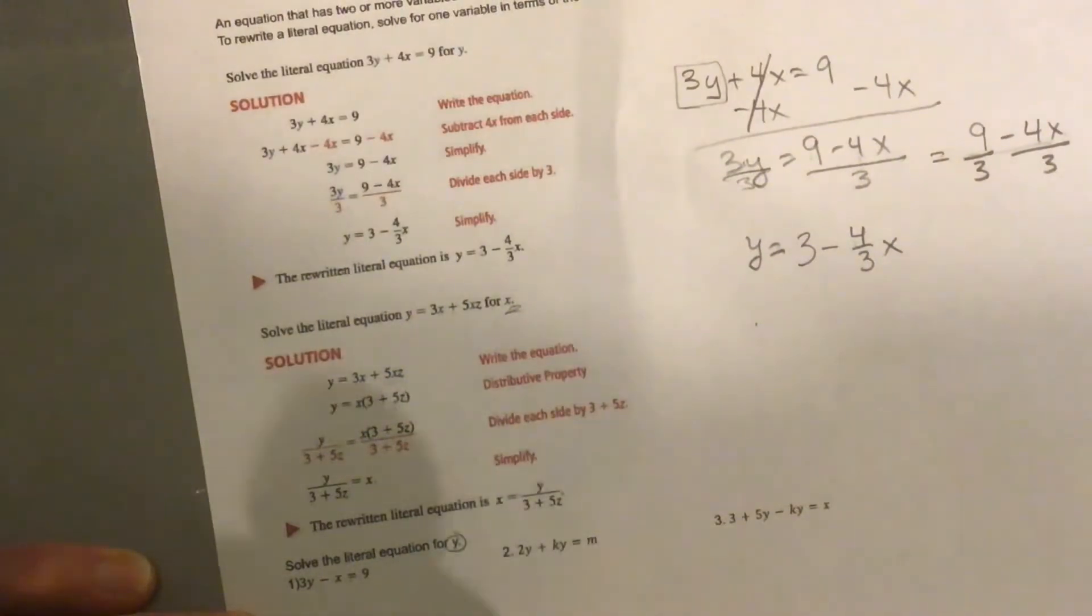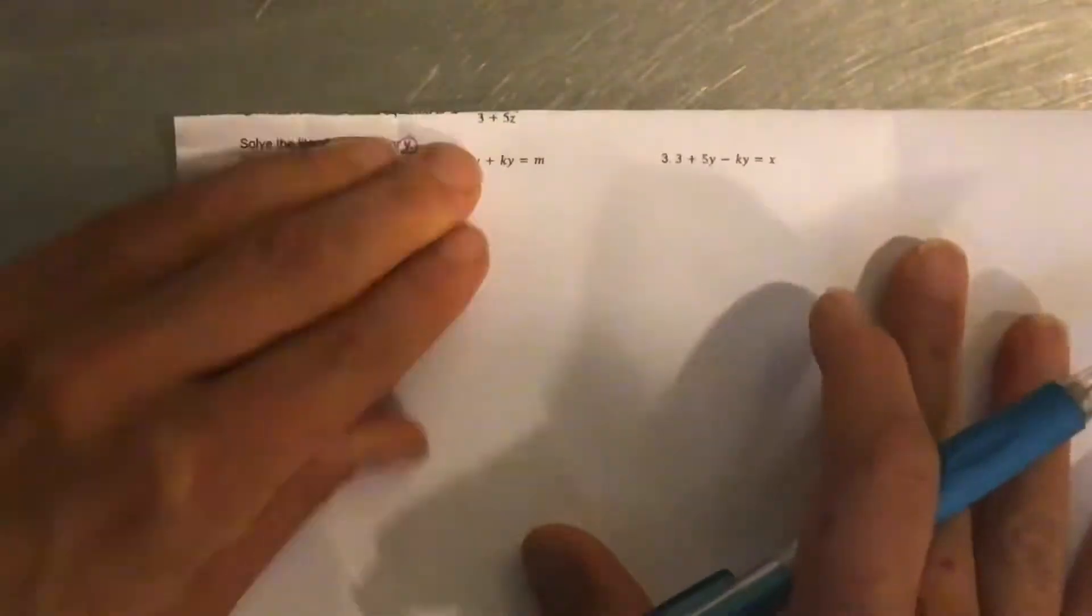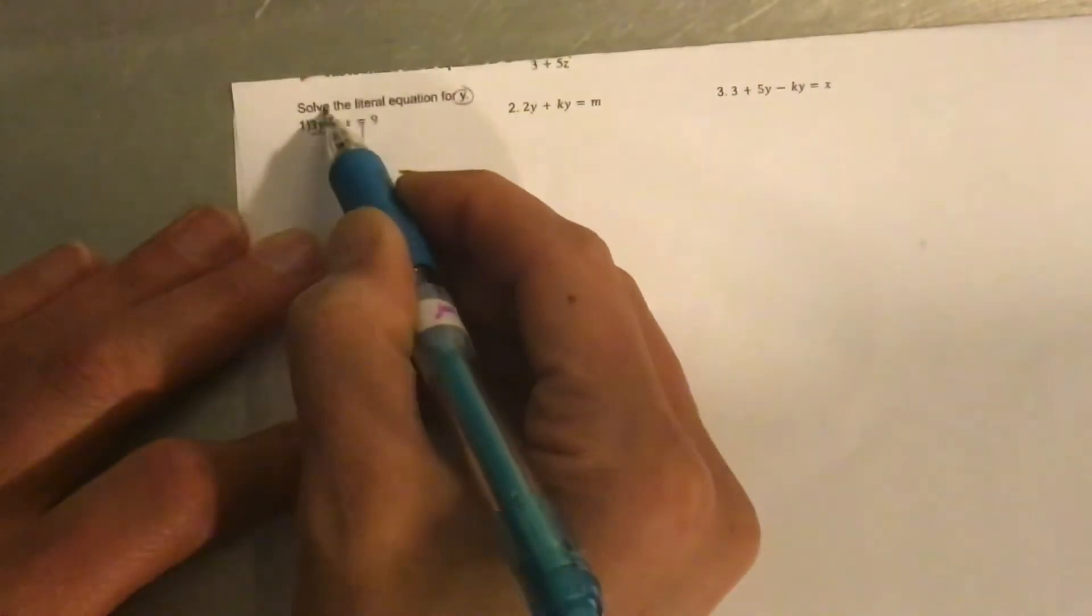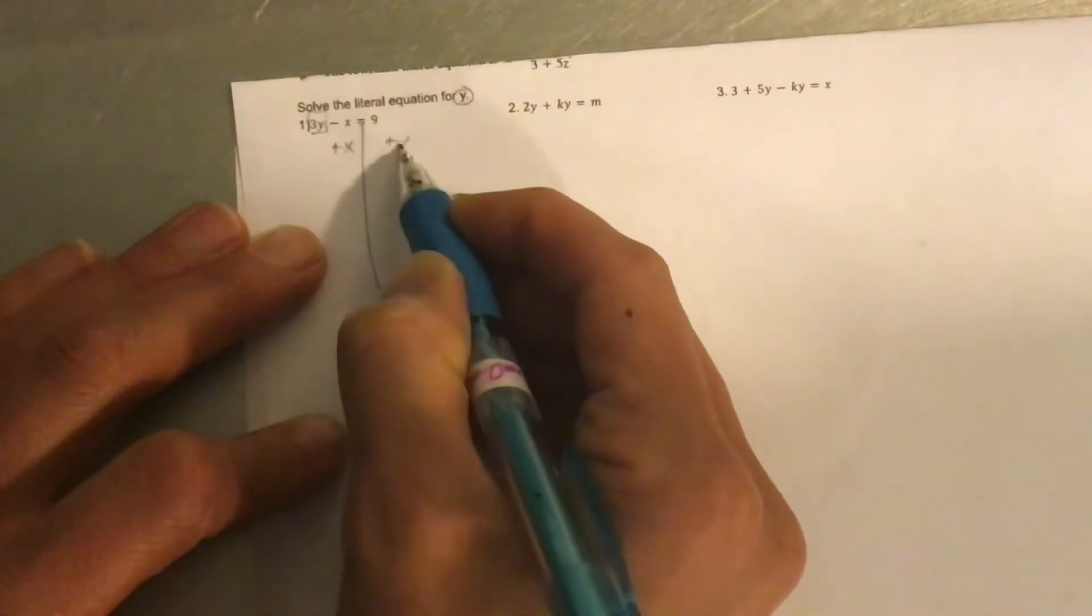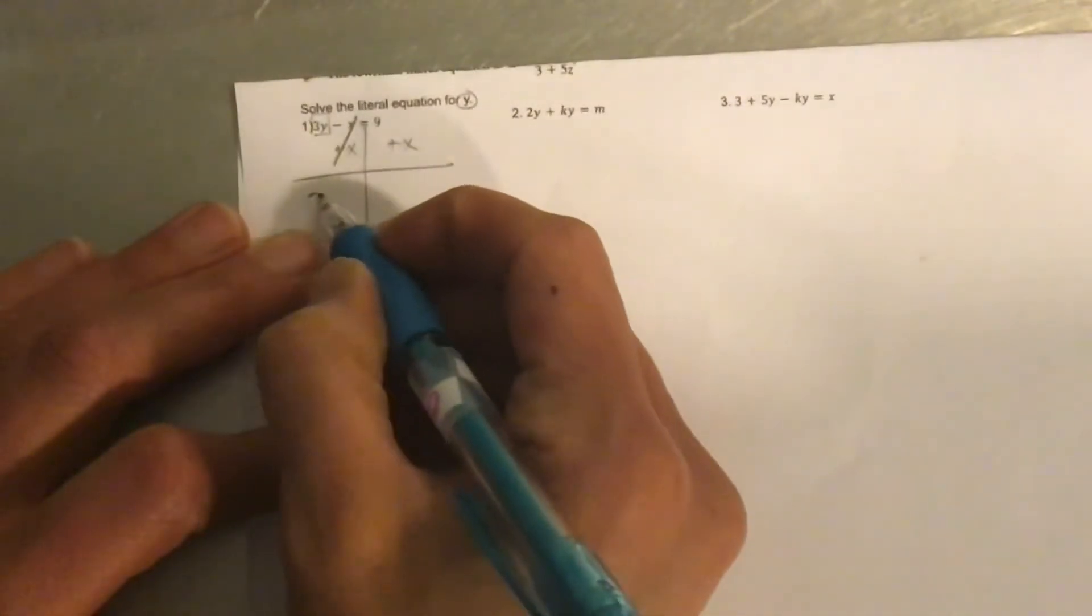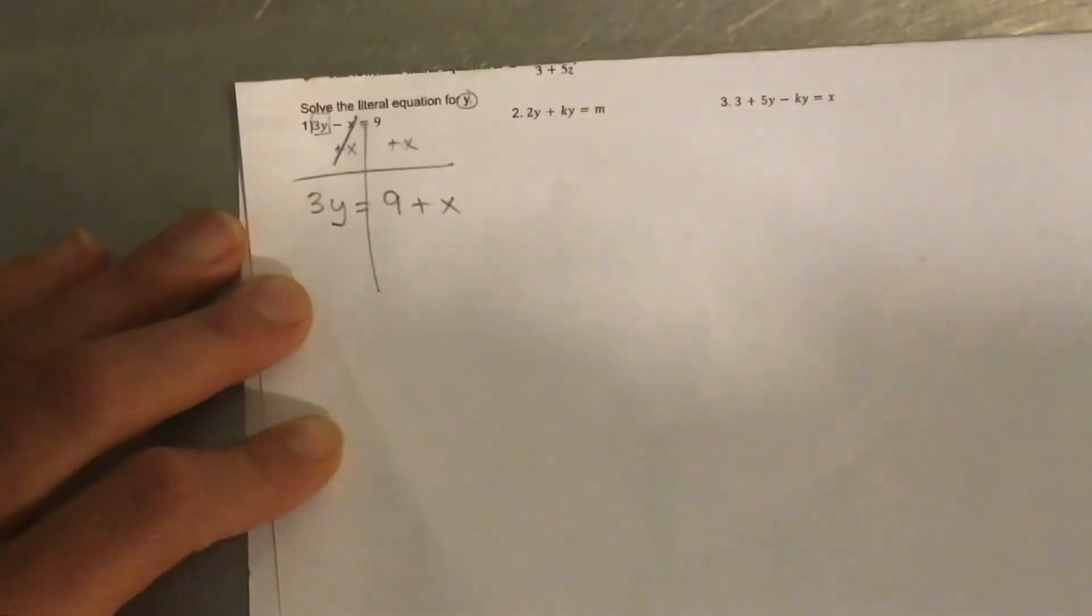All right. Let's do this. Solve for y. Oh, I'm sorry. I can't believe. Let's see. All right. So I'm solving for y. I'm just in the habit of doing that. So I'm going to box that variable term, right? And I'm going to add the x. The x can get away. So then let's simplify. 3y equals 9 plus x.